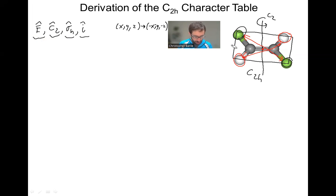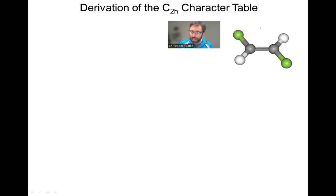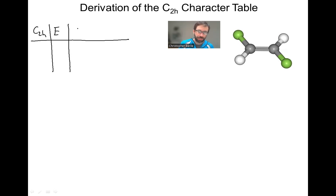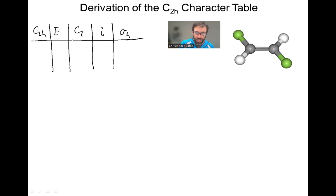Once we've got all of that done, I'm going to clear everything and start fresh. I'm going to start writing out the skeleton of our C2H character table. We write on the top left our point group, which is C2H. Then we have our four classes — I'm dropping the hat notation now since we're talking about classes, not operators. I have E, I have C2 (the principal rotation axis), I have the inversion I, and I also have the mirror plane sigma H. We'll put another column for various functions that we can test.